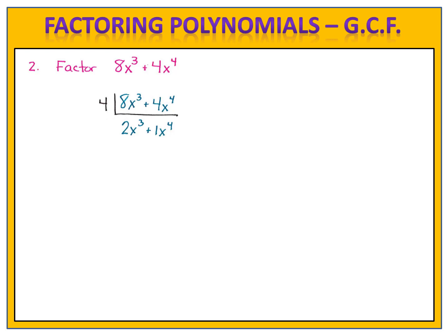Often folks will ask if they have to write the 1 in front of the x to the fourth. I recommend doing it for now and removing it at the end of the problem. Now we turn our sights on the variables. We have x to the third in the first term and x to the fourth in the second term. The smallest exponent on our x's is x to the third, so we factor out x to the third and do our division. 2x to the third divided by x to the third is simply 2, and 1x to the fourth divided by x to the third is simply 1x. There's nothing else in common, so I take the outside result 4x to the third and write that first, then place the 2 plus x inside the parentheses. It's not necessary to write 1x — 2 plus x is appropriate.